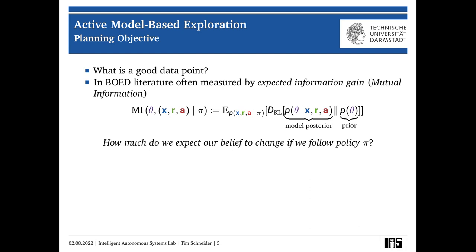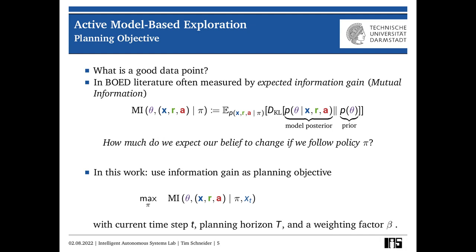So what we propose in this work is to use information gain directly as a planning objective. That means in every step, we plan ahead in order to maximize mutual information between the model parameter theta and the observations we are expecting to make. And since not all states in the state space are equally useful for the task we are trying to solve, we also augment this term by the expected reward. And what this does now is that the agent still explores the entire state space and gathers as much information as possible about its environment. But at the same time, it focuses more strongly on these areas of high reward. And thus, we will have a more accurate model along these trajectories of high reward where we actually need the model to be accurate.